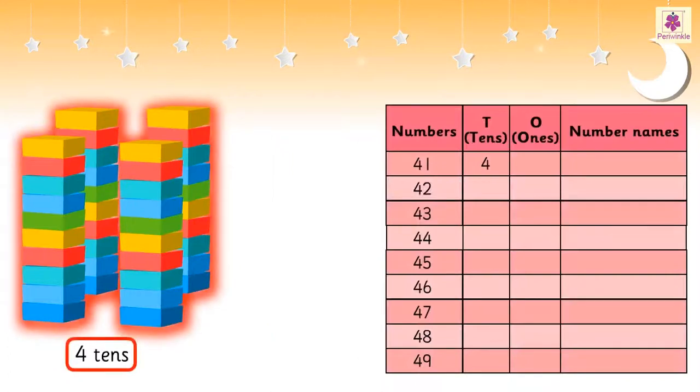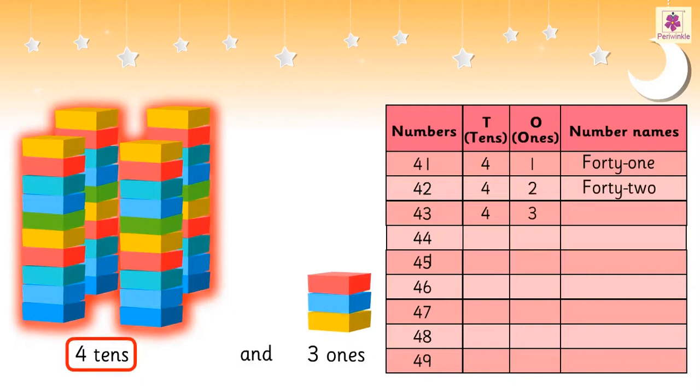Four Tens and One One is 41. Four Tens and Two Ones is 42. Four Tens and Three Ones is 43.